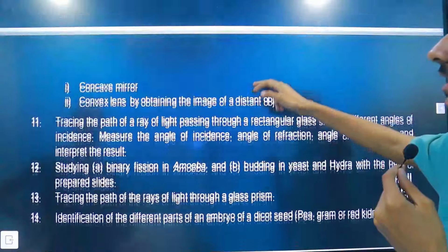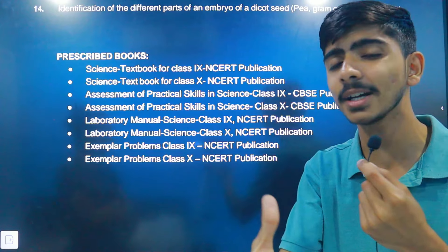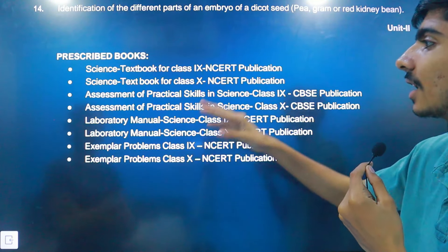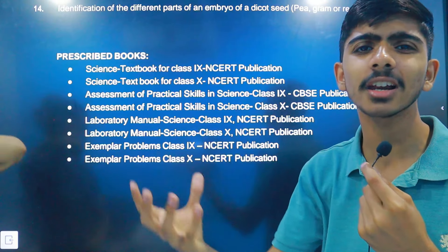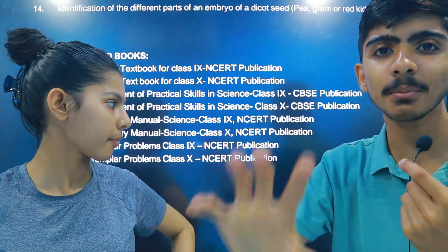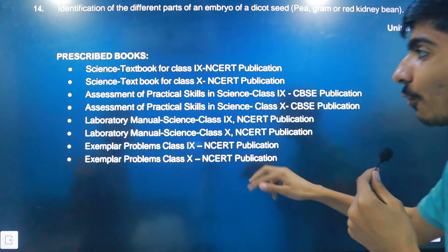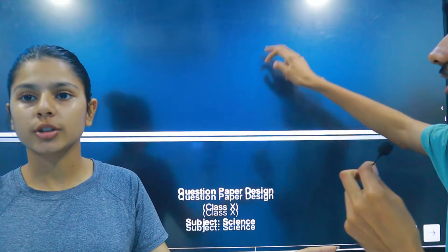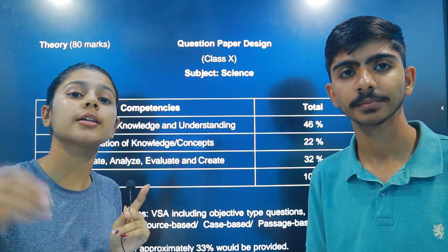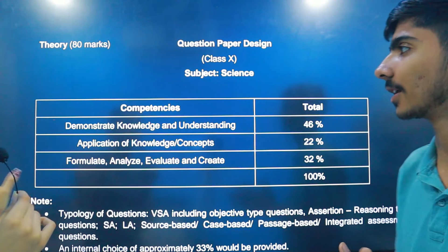Science has 20 marks for practicals. The textbooks CBSE recommends are the NCERT main textbook and the NCERT Exemplar. These are the two main books. NCERT is your foremost priority. The NCERT Exemplar is optional. CBSE recommends NCERT books — take NCERT first, then NCERT Exemplar if you have time.